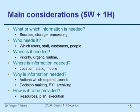What are the main considerations when evolving or defining an information system? This is called five W's and one H. For every information system you want to conceptualize, plan, build, and operate, you must ask these questions right at the outset.